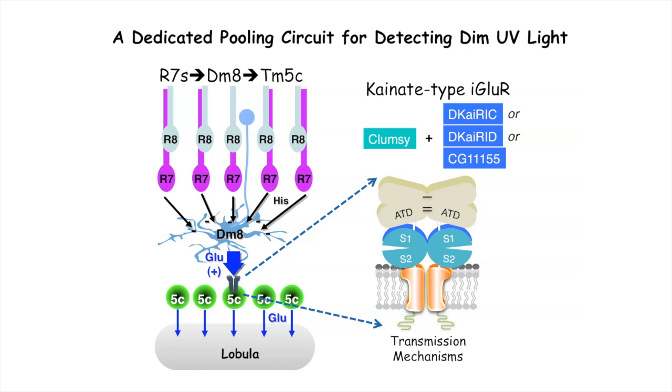This function of glutamate synapses has been implicated in a broad spectrum of neurological disorders, including psychiatric and neurodegenerative diseases. Using robust behavioral assays and powerful genetic tools, we are now investigating the assembly and function of glutamate synapses in the central nervous system.